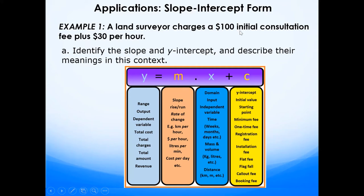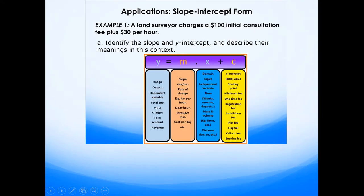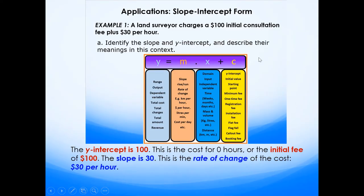The initial value is the y-intercept, so $100 is the y-intercept and $30 per hour is the gradient. The y-intercept is $100 — this is the cost for zero hours, or the initial fee. The slope is $30, which is the rate of change of the cost: $30 per hour.